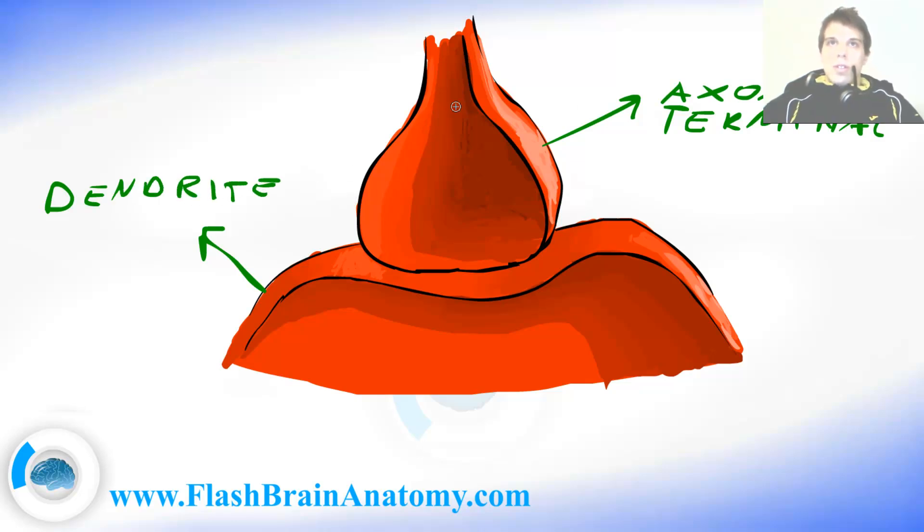So the signal goes through the axon terminal and is being transported somehow here onto the dendrite and then transported further.